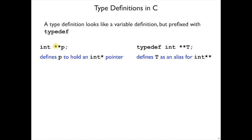We could add more stars. If we said int star star p, that would be declaring p to be a pointer to a pointer to an integer. So if we do typedef int star star t, that means that t is an integer pointer pointer, a type that corresponds to an integer pointer pointer.